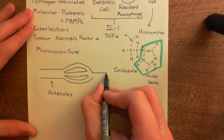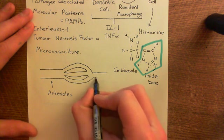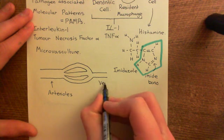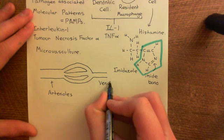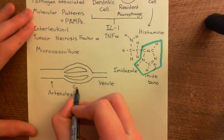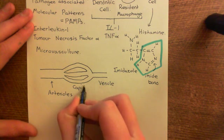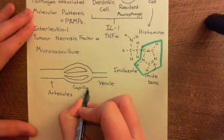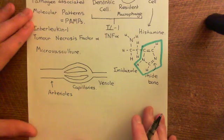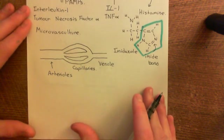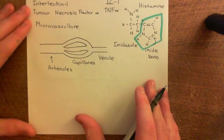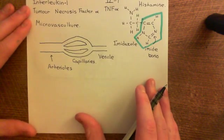The capillaries reconverge to form a venule. Let's briefly look at the structure of these blood vessels, because it's important when we examine the acute inflammatory response.